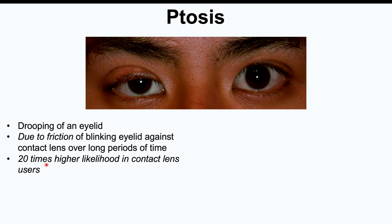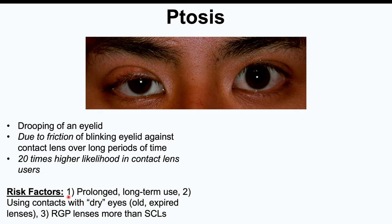Ptosis is 20 times more likely in contact lens users compared to non-contact lens users. Risk factors include prolonged long-term use of contact lenses, using contacts with dry eyes — from old or expired lenses or other reasons — which leads to increased friction of the blinking eyelid over the lens, and using rigid gas permeable lenses as opposed to soft contact lenses.